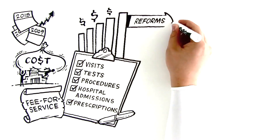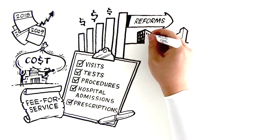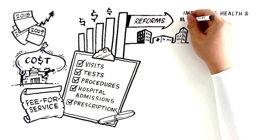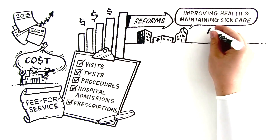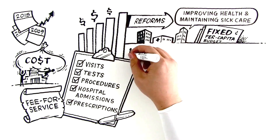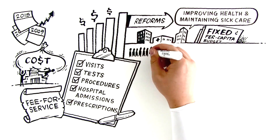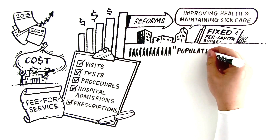However, reforms have moved us toward a system where providers are rewarded for improving health while maintaining access to sick care within a fixed, per capita budget. Such a population-based payment system is commonly called Population Health, or Payment for Value.